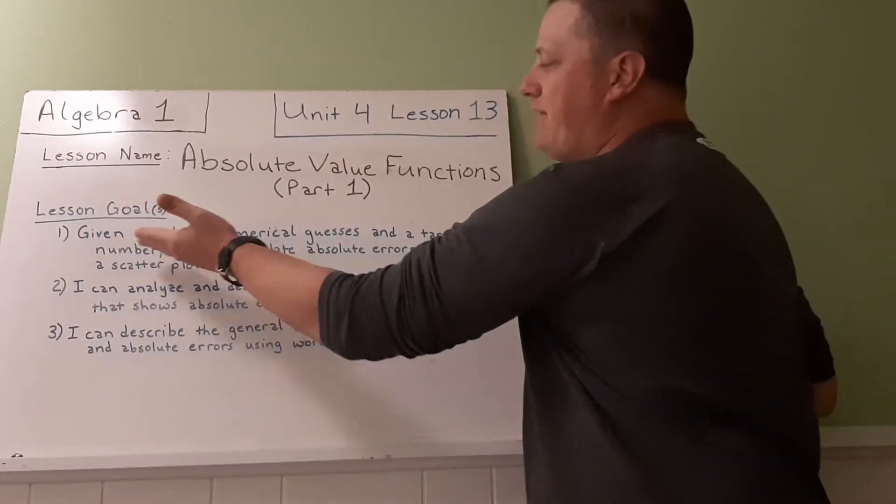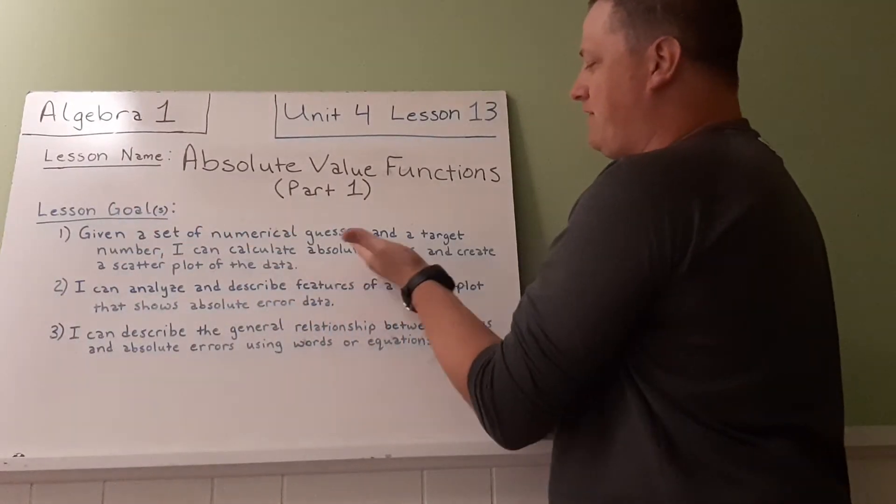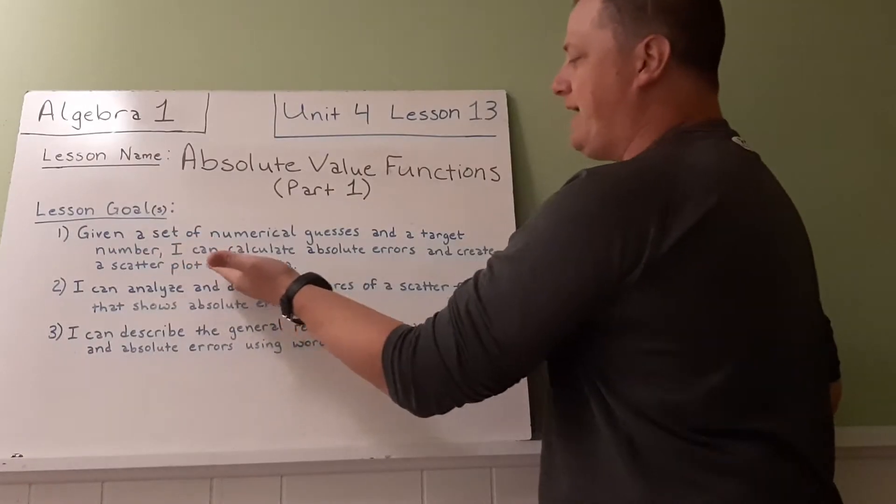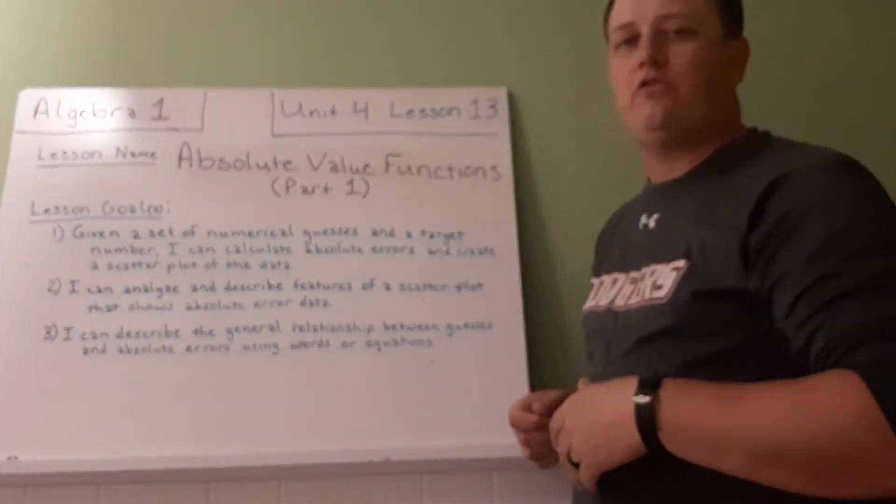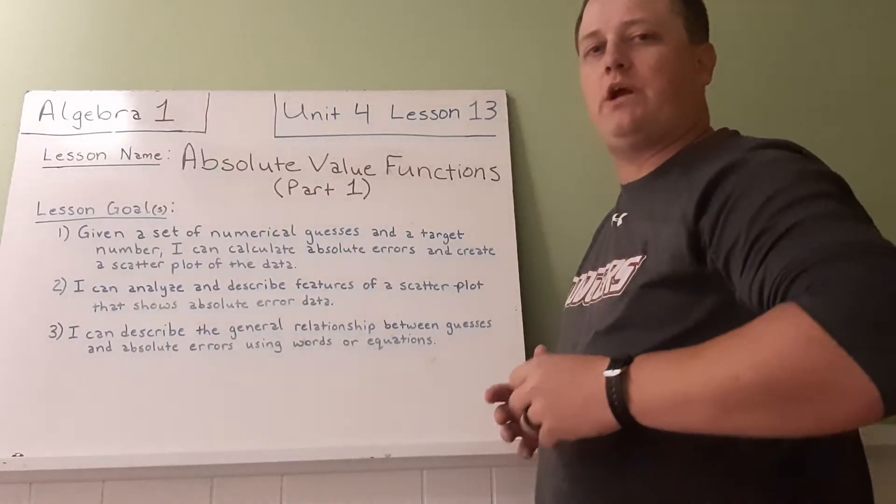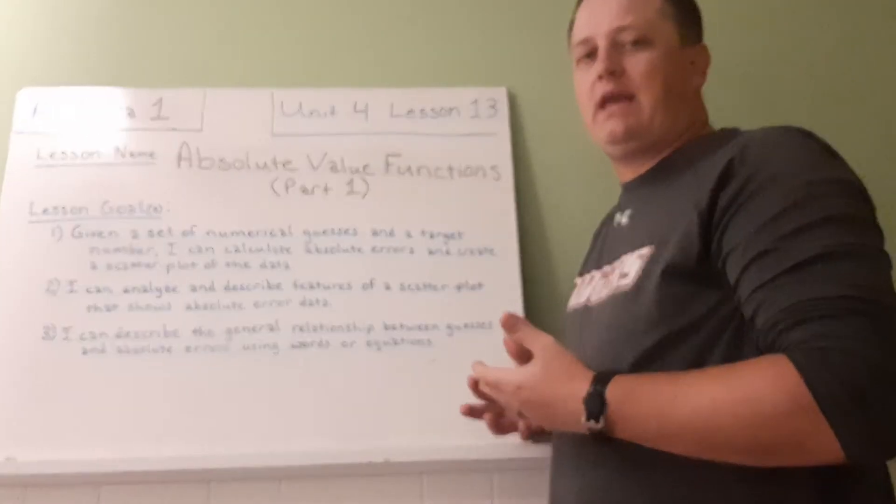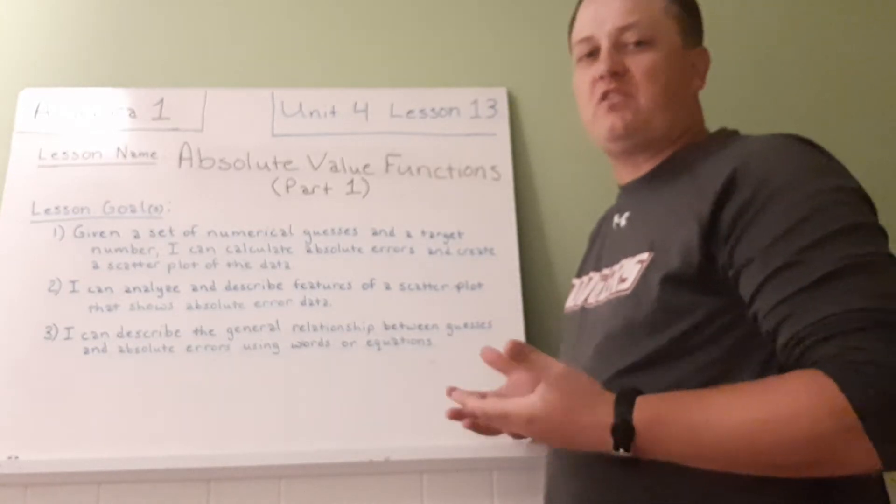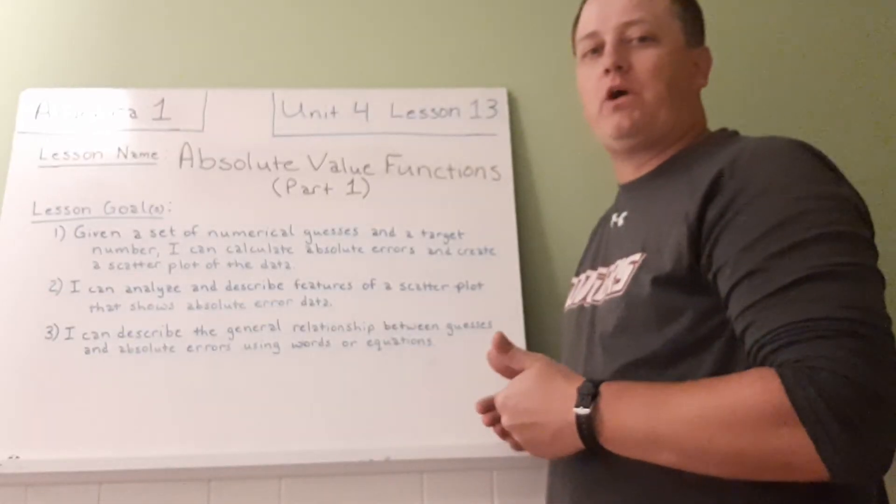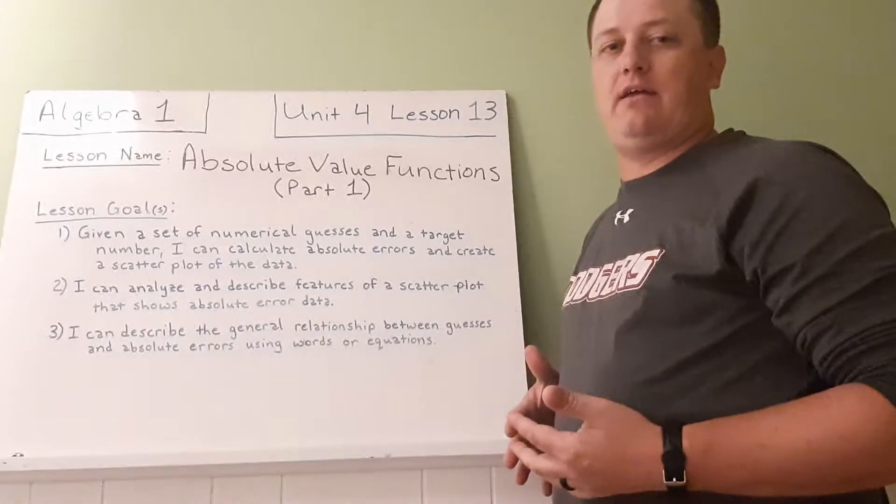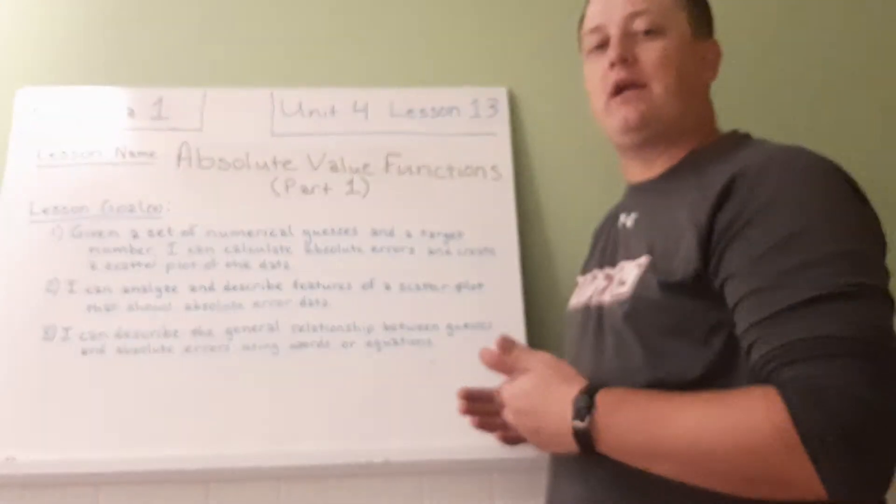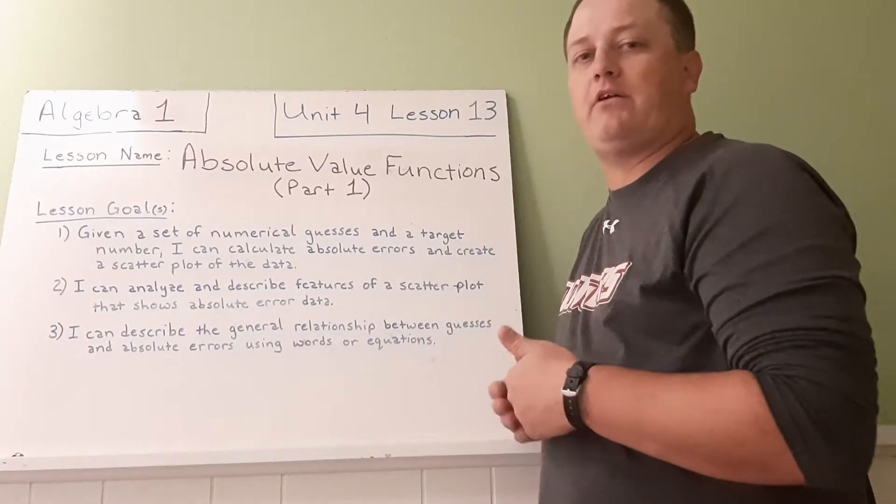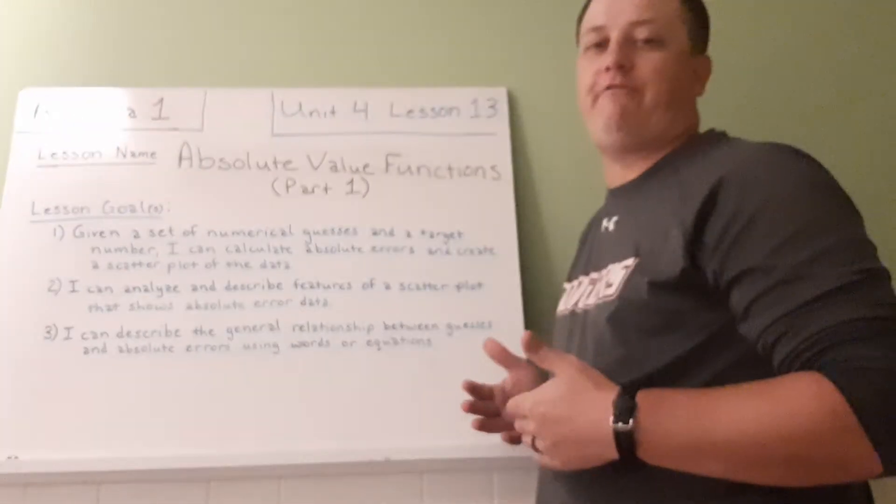So, goal 1. Given a set of numerical guesses and a target number, I can calculate absolute errors and create a scatterplot of the data. We're going to have a situation where you're going to look at something, you're going to guess some value of what's going on, and then we're going to look at what the actual data is, and we're going to calculate the absolute error, which is just how far your guess is away from the correct answer. We don't care about whether it's big or small, just how far away it is.